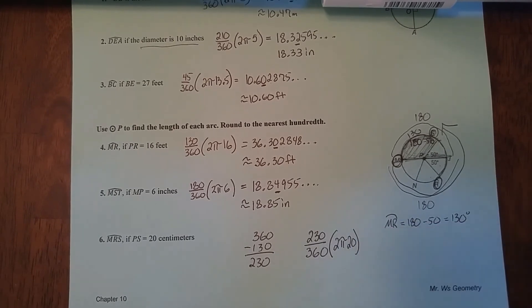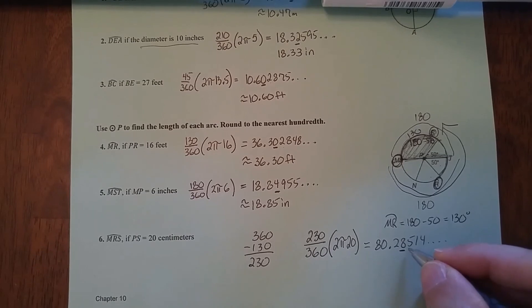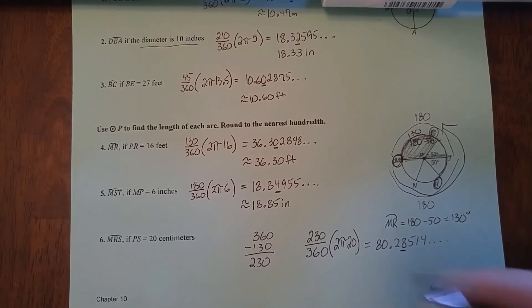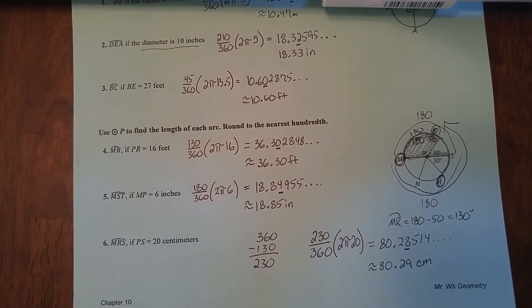Now PS is a radius, so we can use that directly. We get this. Rounding to the nearest hundredth. Look to the right. Five or more. So there's the rounded answer. If you can do all these, you should be totally set for the test. Just expect the same problems with different numbers.